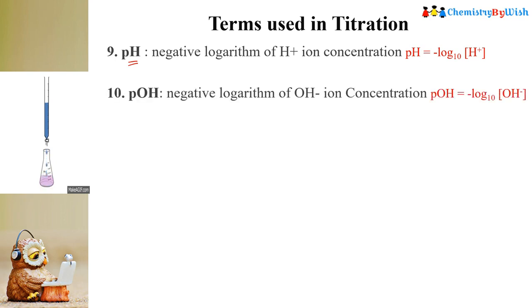The next term is pOH. pOH is the negative logarithm of OH− ion concentration, which is given by the formula pOH = −log₁₀[OH−].